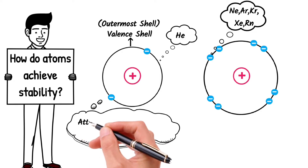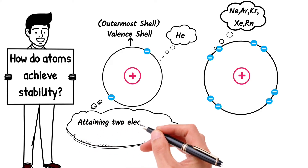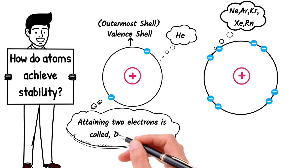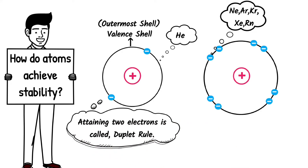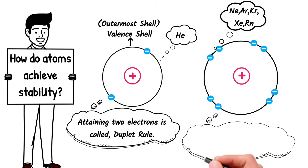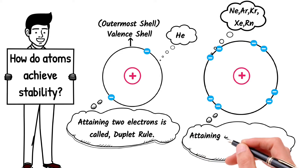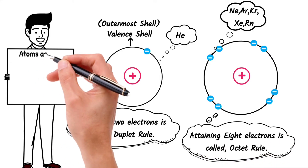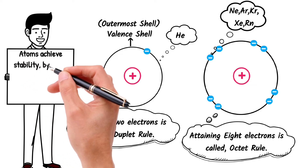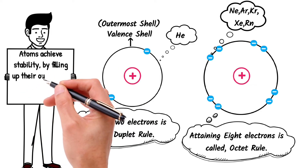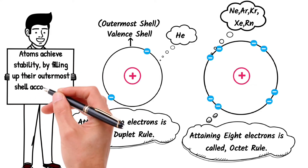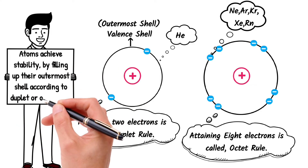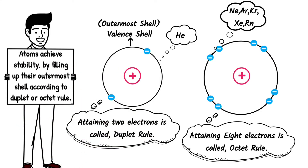Attaining two electrons in the valence shell is called the duplet rule, while attaining eight electrons in the valence shell is called the octet rule. So atoms achieve stability by filling up their outermost shell with electrons according to the duplet or octet rule.